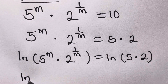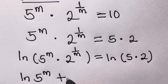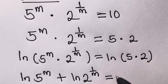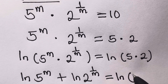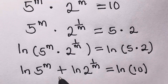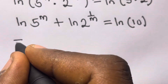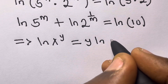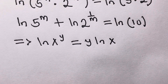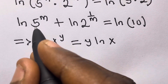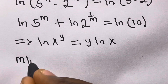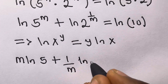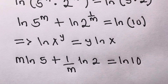Since we have multiplication inside the log, this will turn to addition. So we have ln(5^m) plus ln(2^(1/m)) equals ln(10). Now recall that if you have ln(x^y), this equals y·ln(x). So applying that rule, we get m·ln5 plus (1/m)·ln2 equals ln10.